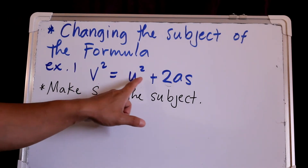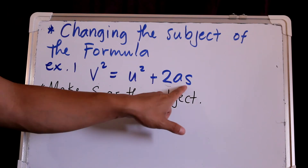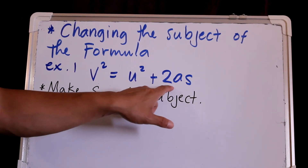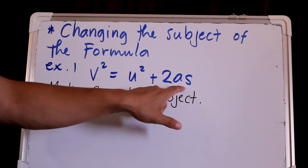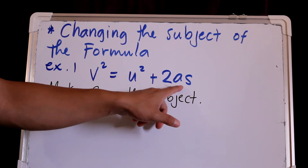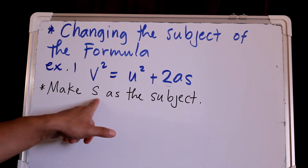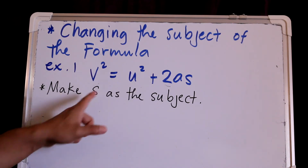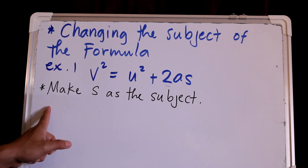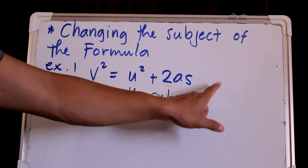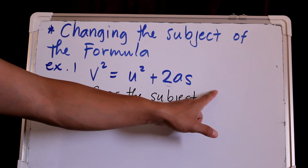So if it is multiplication — and we want to transfer, say, to find S only — that means it becomes division on the other side. So right here, if it is multiplied, you have to divide it.